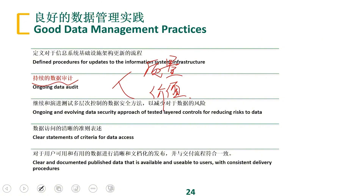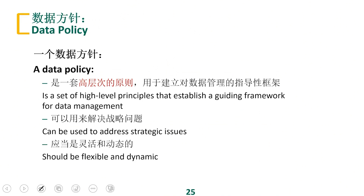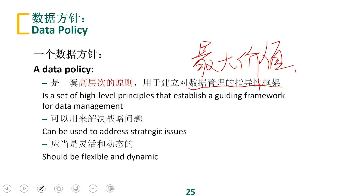So the whole data audit is necessary in the process of data use — it's a must-do thing. It reduces the risk of data. We mentioned a very important concept at the beginning: the data policy. The data policy is different from the data security policy. The data policy is a guiding framework document for data management — we can understand it as how to maximize the value of data, to allow data to provide the maximum value. The data policy is more about the business level, and security is part of the data policy.